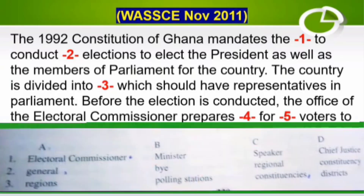The 1992 Constitution of Ghana mandates the DASH. Options: A. Electoral Commissioner, B. Minister, C. Speaker, D. Chief Justice. The correct answer is A — the Electoral Commissioner. The next gap: to conduct DASH elections. Options: A. general elections, B. by elections, C. regional elections, D. constituency elections. The correct answer is A — to conduct general elections to elect the president as well as members of parliament for the country.